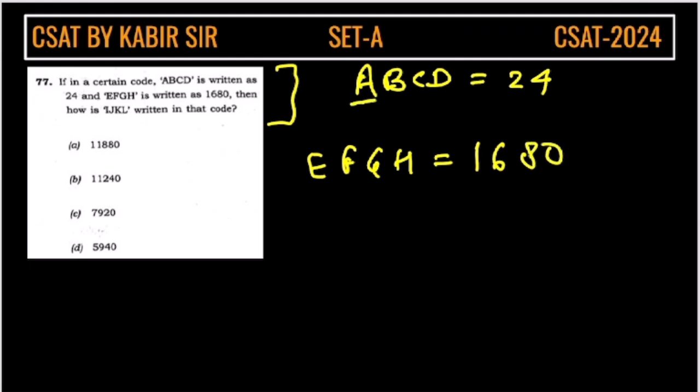So in the alphabet, the order of the position of alphabet A is 1, this is 2, this is 3 and this is 4. So we are getting 24.